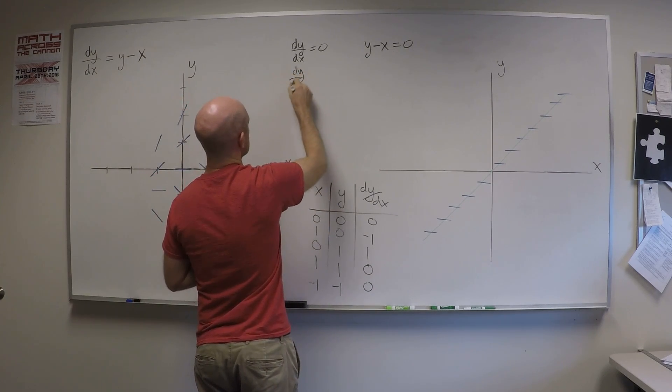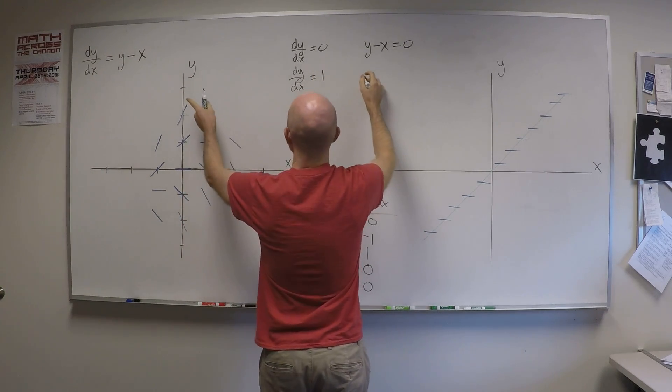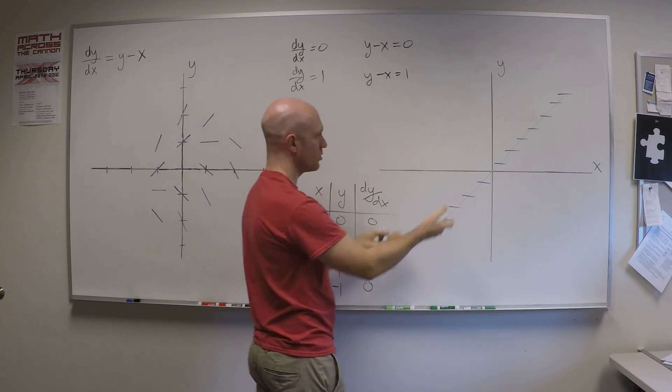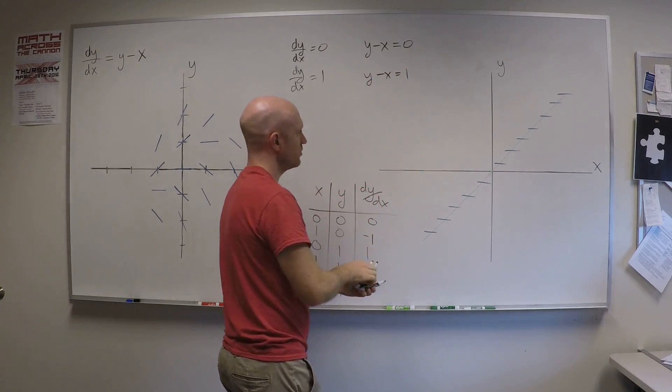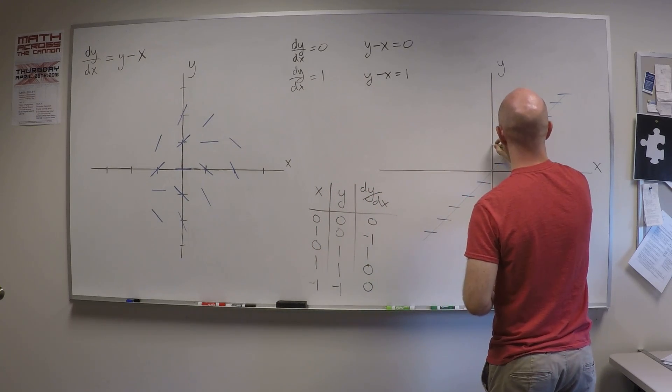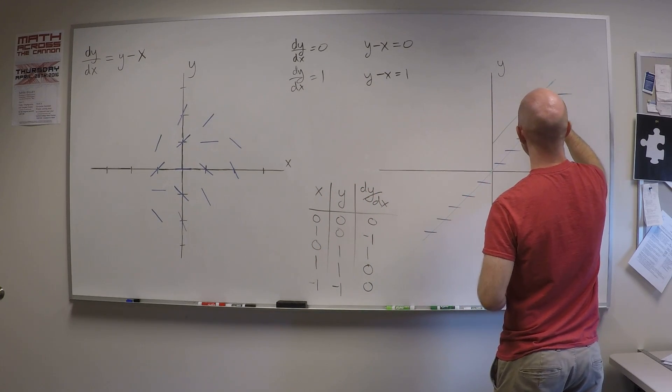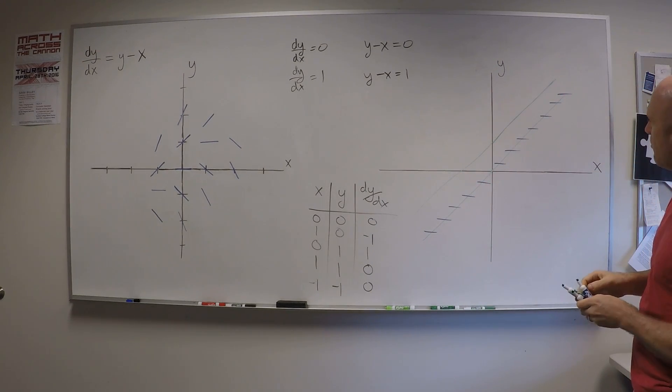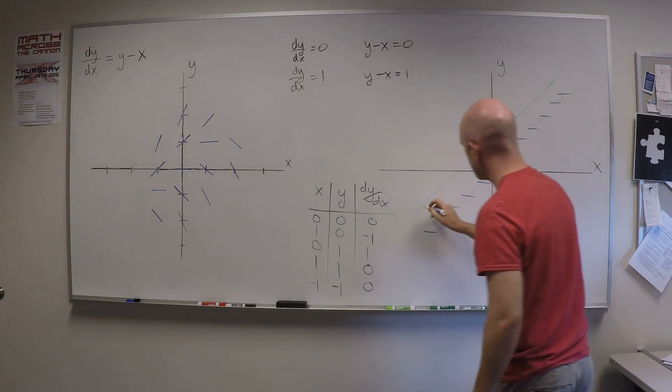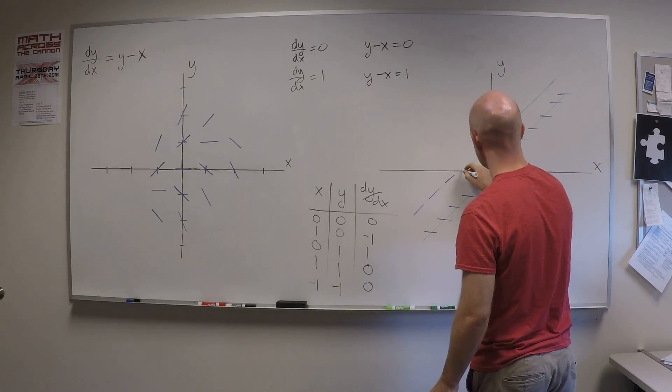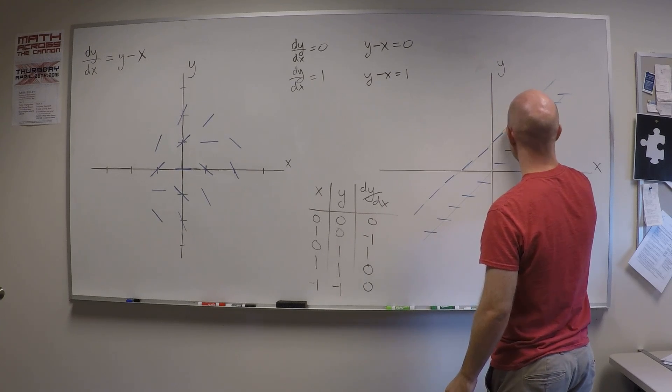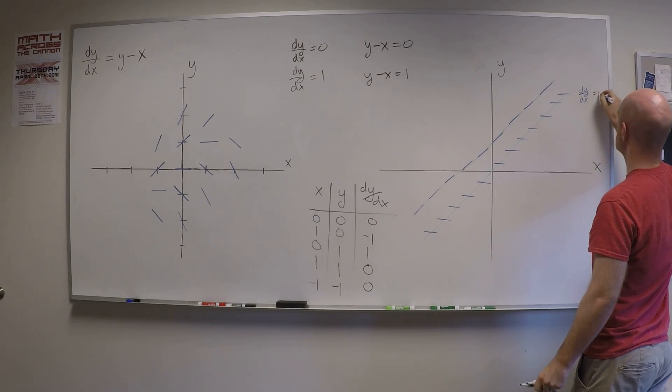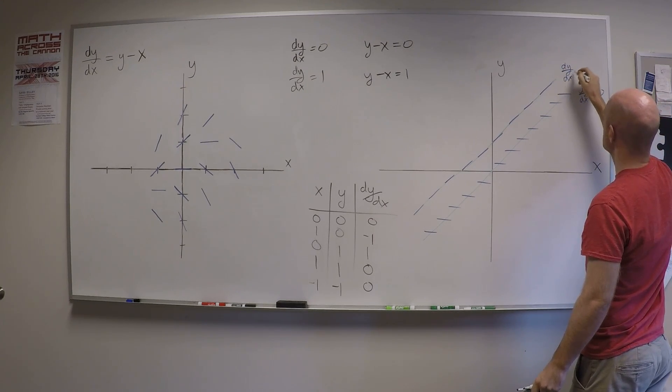dy/dx equals 1. Okay. That means that y minus x needs to be equal to 1. And that's the same as y equals x plus 1, which is this line shifted up one unit. So let's shift it up one unit like this. Parallel line of slope 1 just with a different y-intercept. Now everything on that line has to have slope 1. And in fact, that'll be right along the line of the isocline.